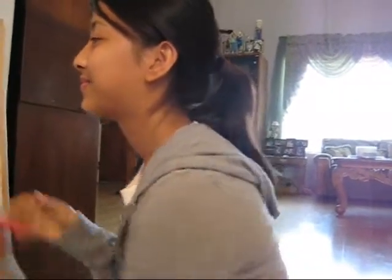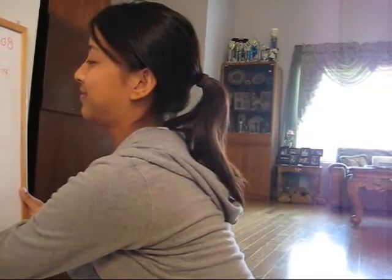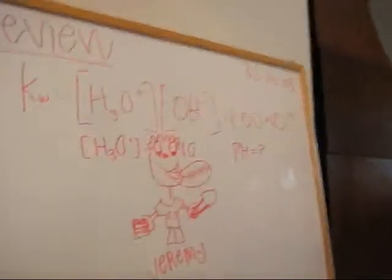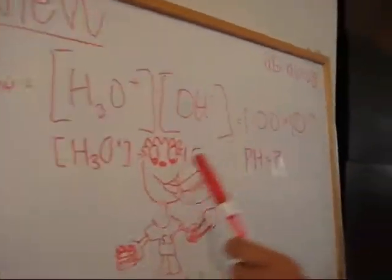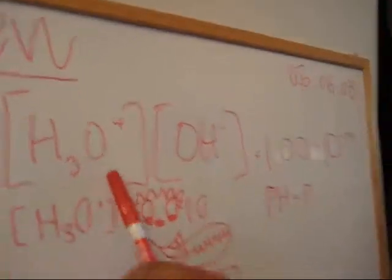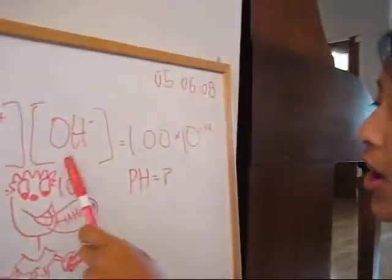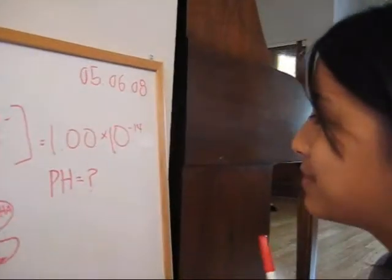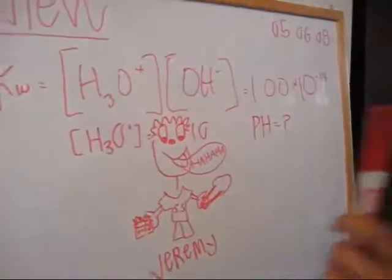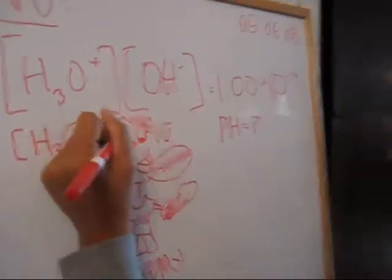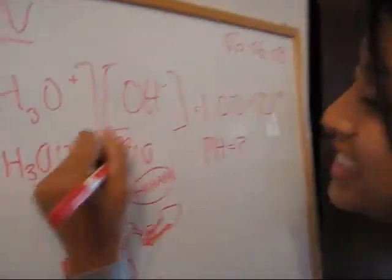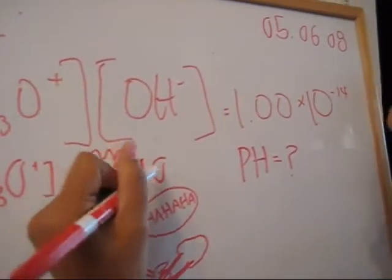So Lori, the question is: what is the pH of an aqueous solution with hydronium equal to 0.010? So you use the equation Kw equal to the concentration of H₃O⁺ times OH⁻ equals 1 times 10 to the negative 14th. And then the given is the hydronium ion concentration, which is 0.010.